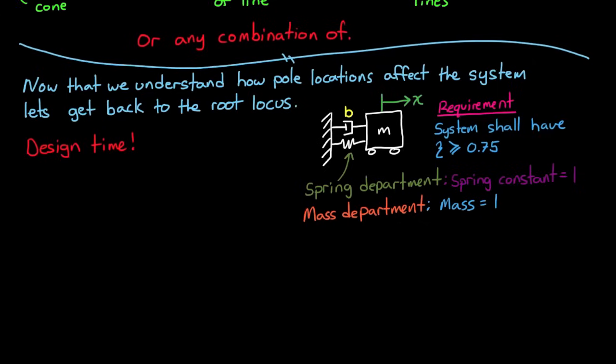So now you get to pick your own damper, with any damping coefficient you need in order to meet the system requirement. So your transfer function for this system, from input u of t to output x of t, would look something like this. And notice that I left the unknown damping coefficient, b, as a variable in this transfer function.